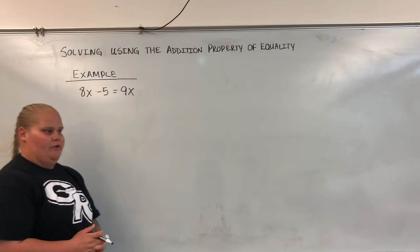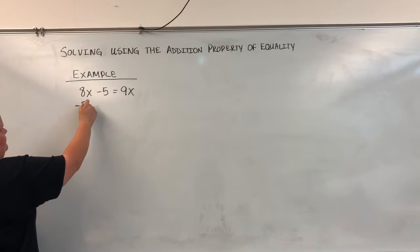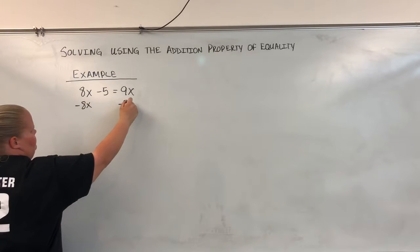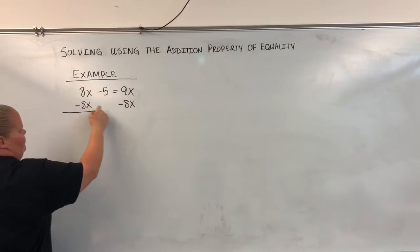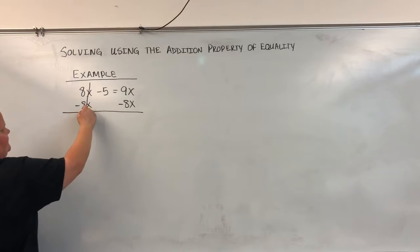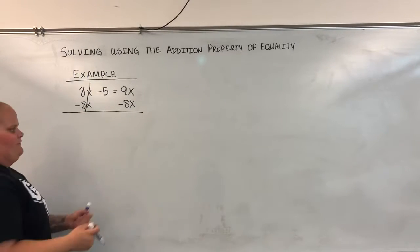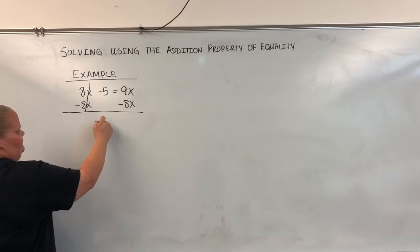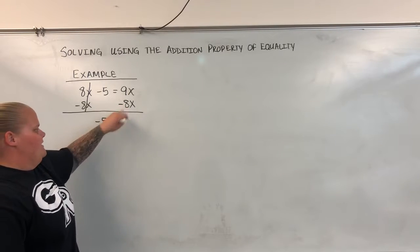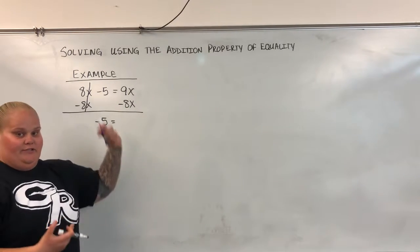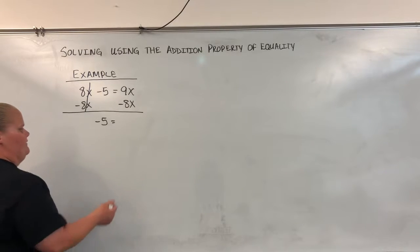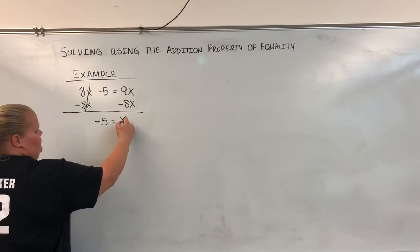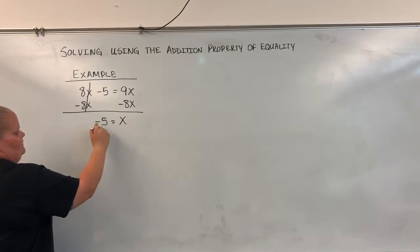So the first thing we're going to do is subtract 8x from both sides. When we do that, these are going to cancel out. And all that I'm left with on this side of the equal sign is negative 5. Here I have 9x minus 8x. Now the x's are together and I just have to simplify. That leaves me with x. So here x equals negative 5.